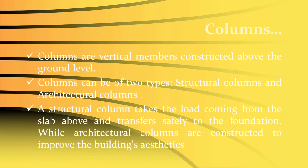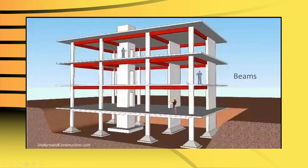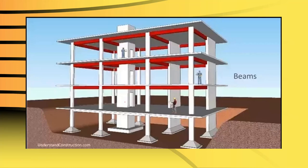Columns are vertical members constructed above ground level. They can be of two types: structural columns, which take the load from the slab above and transfer it safely to the foundation, and architectural columns, which are constructed to improve the building's aesthetics. Here you can see the beams, columns, slab, and foundation forming the framed structure.